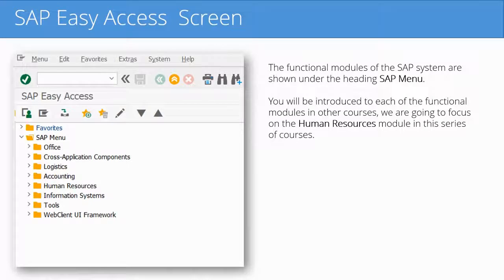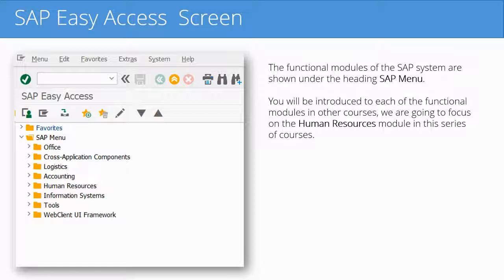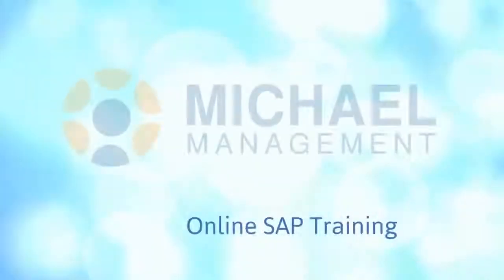Looking at the SAP screen delivered with SAP — the so-called GUI screen — when we sign on to SAP you will see the SAP menu coming up. We will address a few of these items: the ones we just spoke about are under the Accounting line and under Human Resources. We will dive deeper into the Human Resources module and look at all the different sub-modules available.